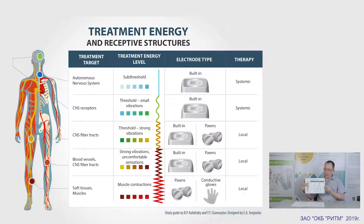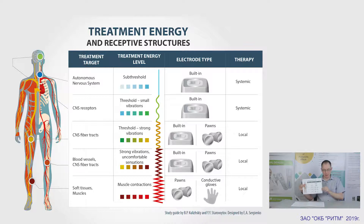When we continue to increase the treatment energy, the scanner device begins to focus on the blood vessels and all types of nerves, which increases the effectiveness of anti-pain, anti-edemic, and trophic therapy, as well as joint treatment. Here we mainly use external electrodes.